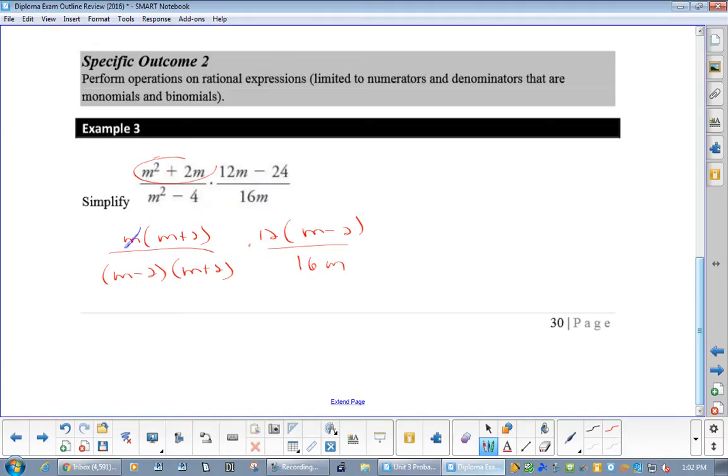Okay, so this m would cancel with this m. This m plus 2 would cancel with this m plus 2. This m minus 2 would cancel with this m minus 2. And then I'm left with 12 over 16, which is 3 over 4. m cannot equal, here, 2 is bad. Here, negative 2 is bad. Here, 0 is bad. So plus or minus 2 and 0.